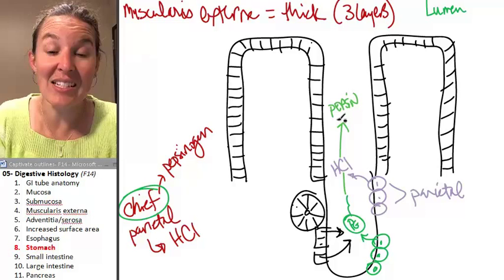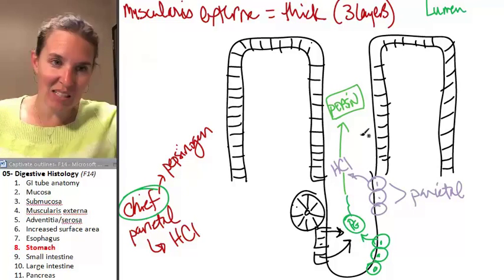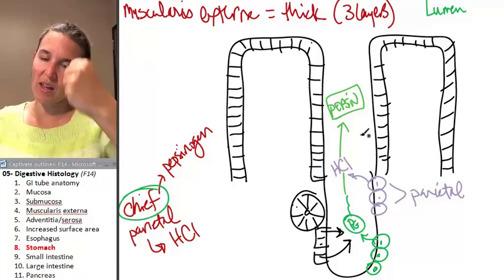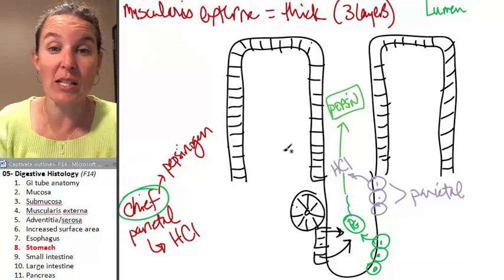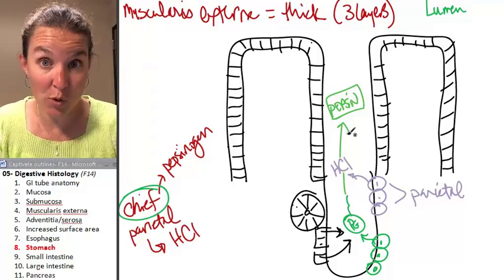And pepsin is an active protein enzyme. So, pepsin will actively bust, destroy, chomp, break apart your proteins and start the process of digestion so you can absorb those proteins.